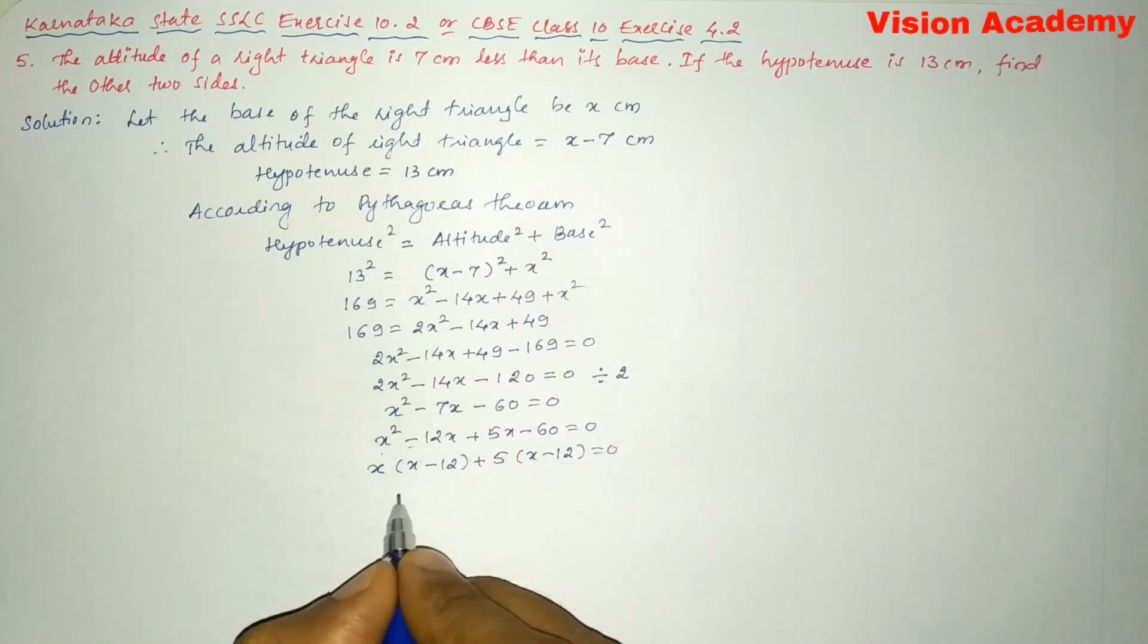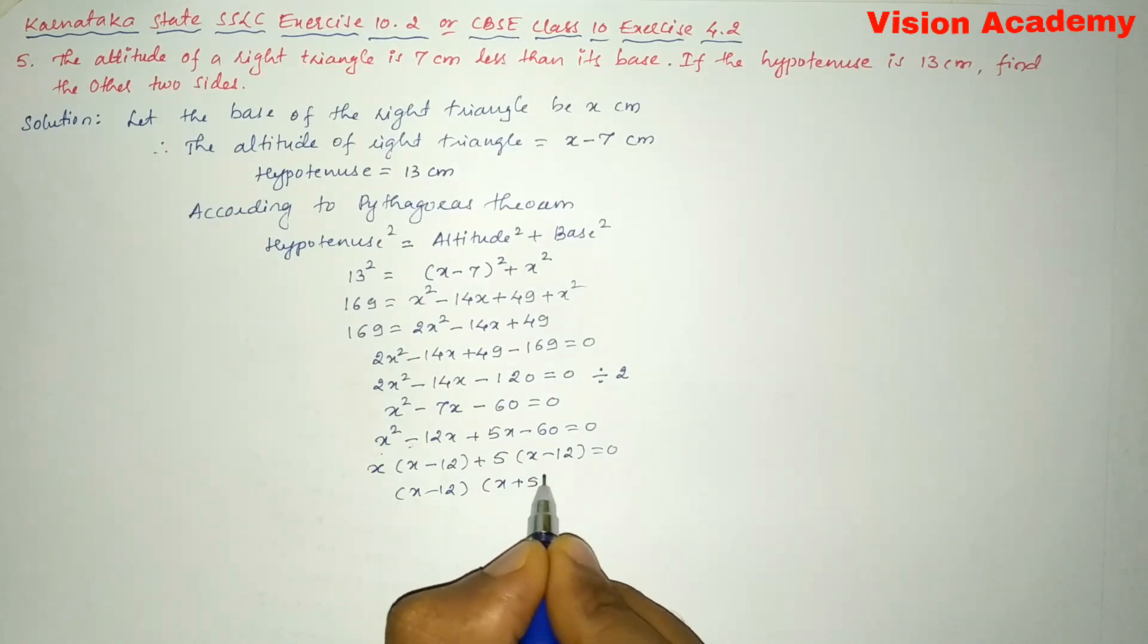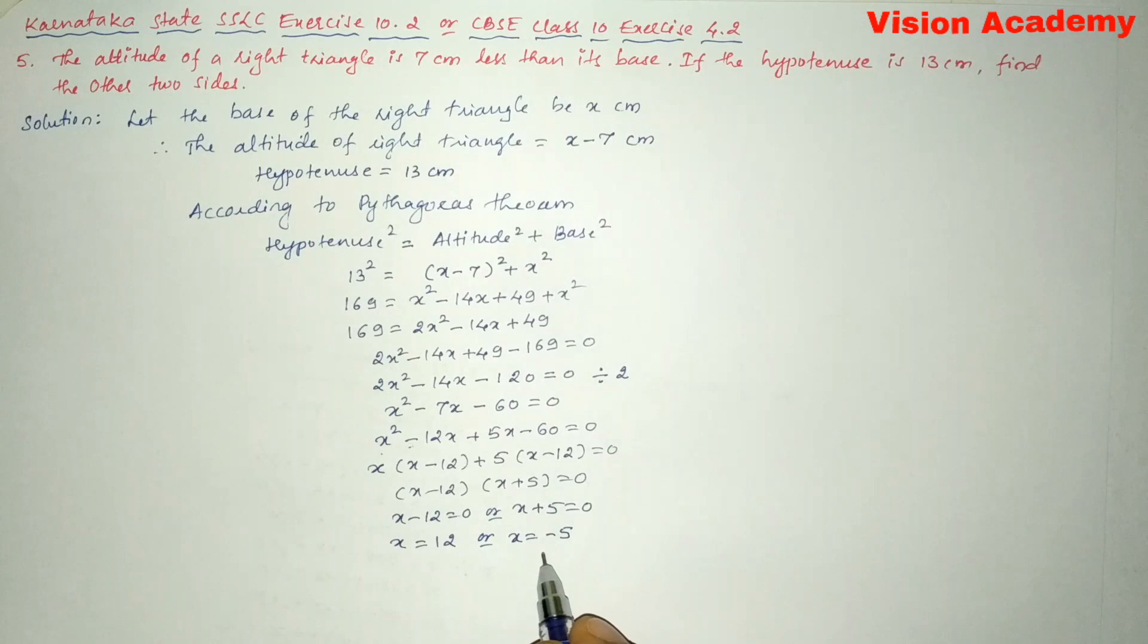Now you can write x minus 12 into x plus 5 is equal to 0. Here we can also write x minus 12 is equal to 0 or x plus 5 is equal to 0. Now you can write this one as, let us transform this minus 12 from LHS to RHS, now it will become plus 12, or x is equal to, transform this plus 5 from LHS to RHS, now it will become minus 5. So we are not going to consider the negative value, we are going to take only the positive value.